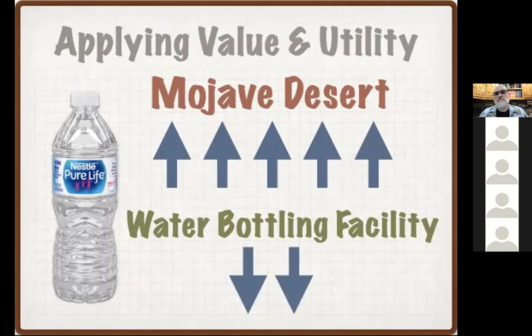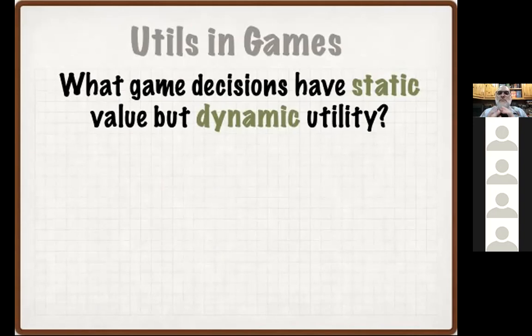That value might change over time for the same person. Today I'm thirsty, tomorrow I'm not — so that's going to have a very different impact on your evaluation of how many utils a particular item or choice has. Game decisions are interesting because they are these weird tiny balls of chaos that aren't always easy to measure. Even though we might have some objective measurements, there are a lot of subjective elements to it — a static value with a dynamic utility.